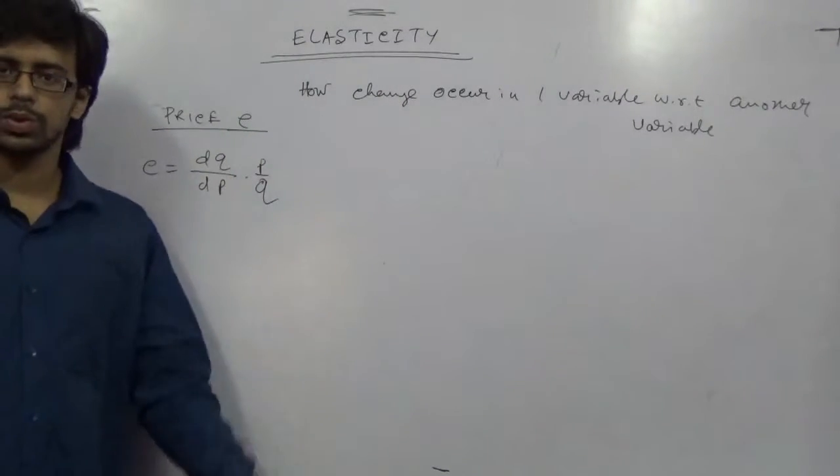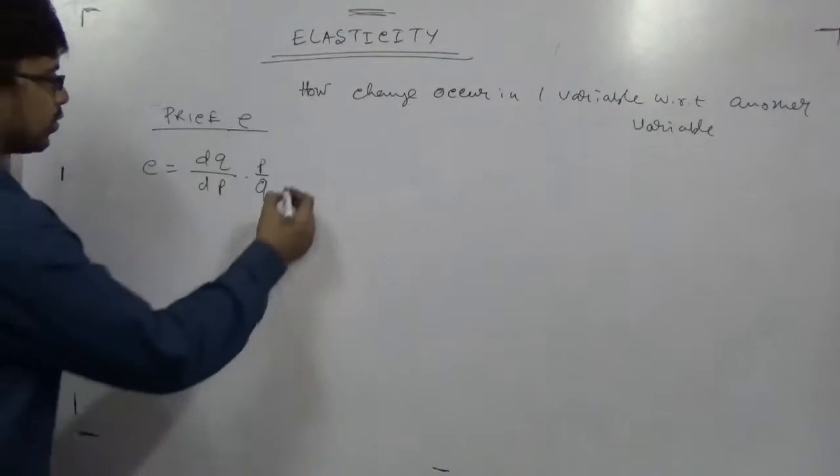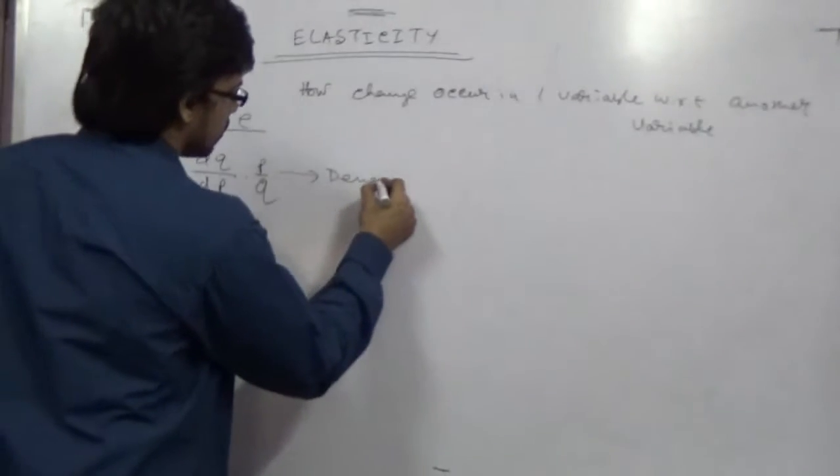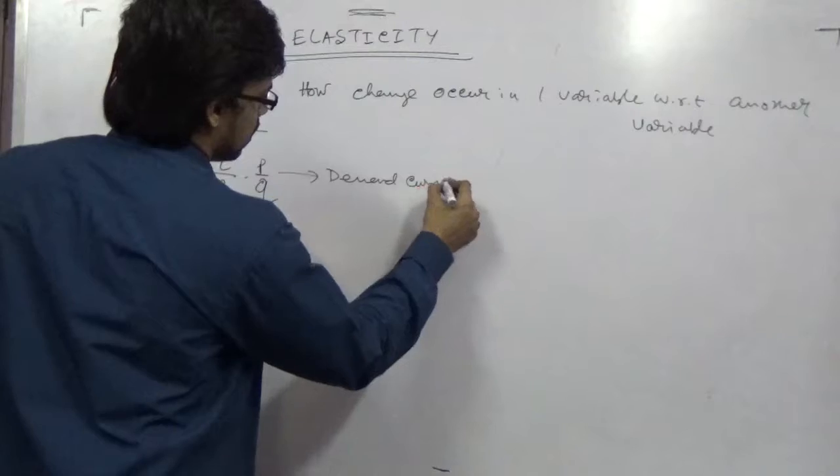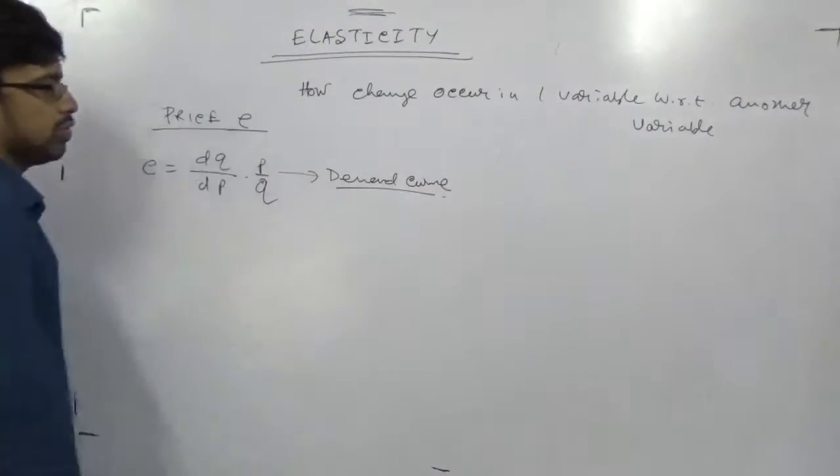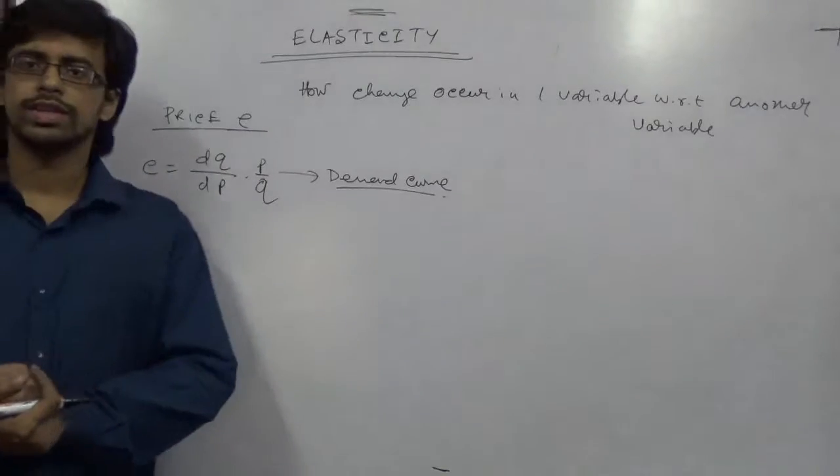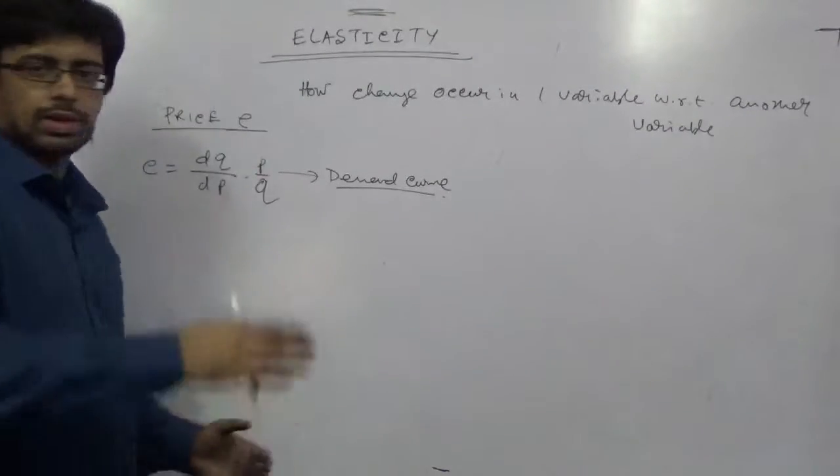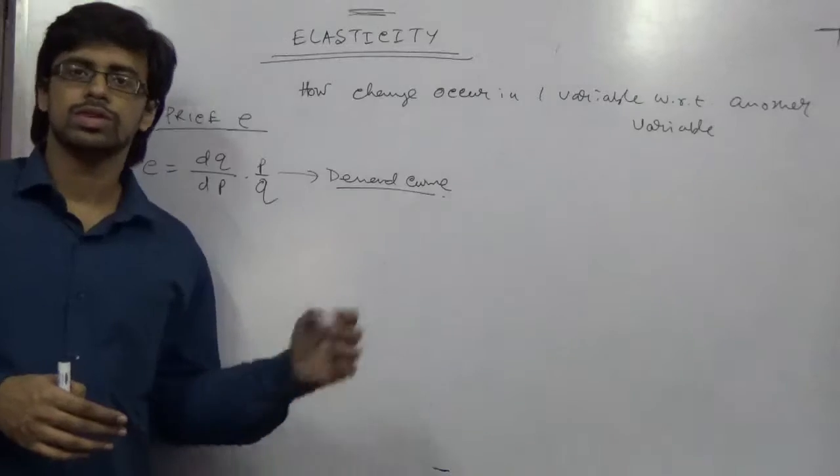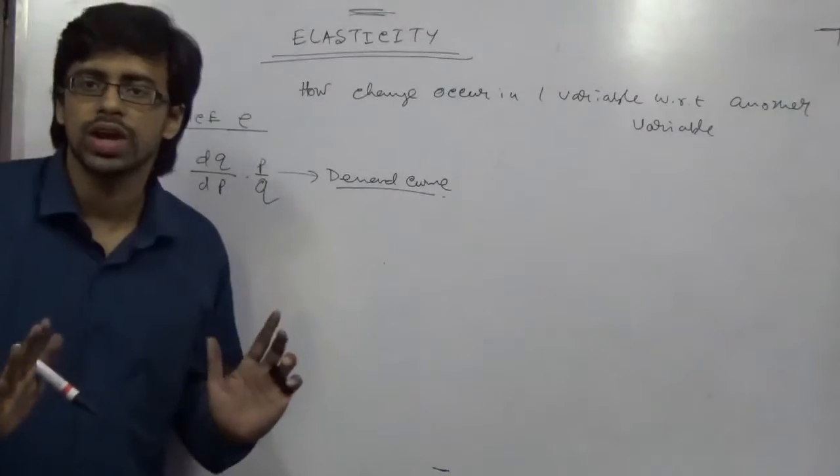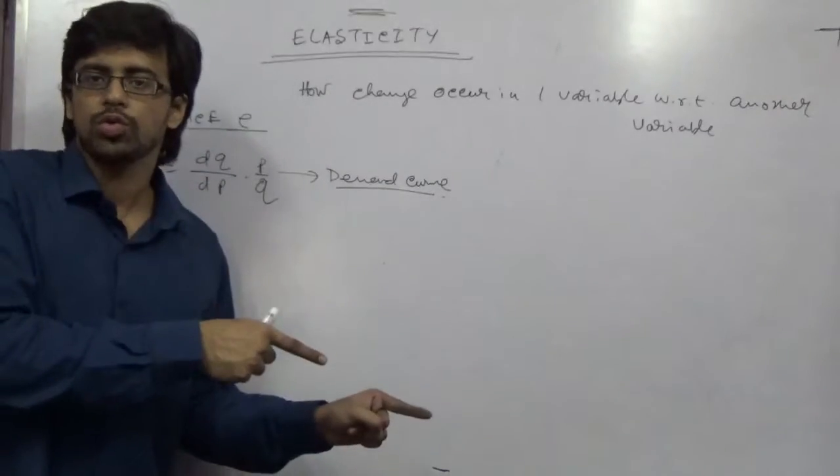dq by dp into p by q. In general it is calculated from demand curve of a particular product. This is very simple. In most of the books you will see they put a mod sign, sometimes they put a greater than sign, sometimes they by default put a minus. You don't have to do anything. Your equation will tell you.